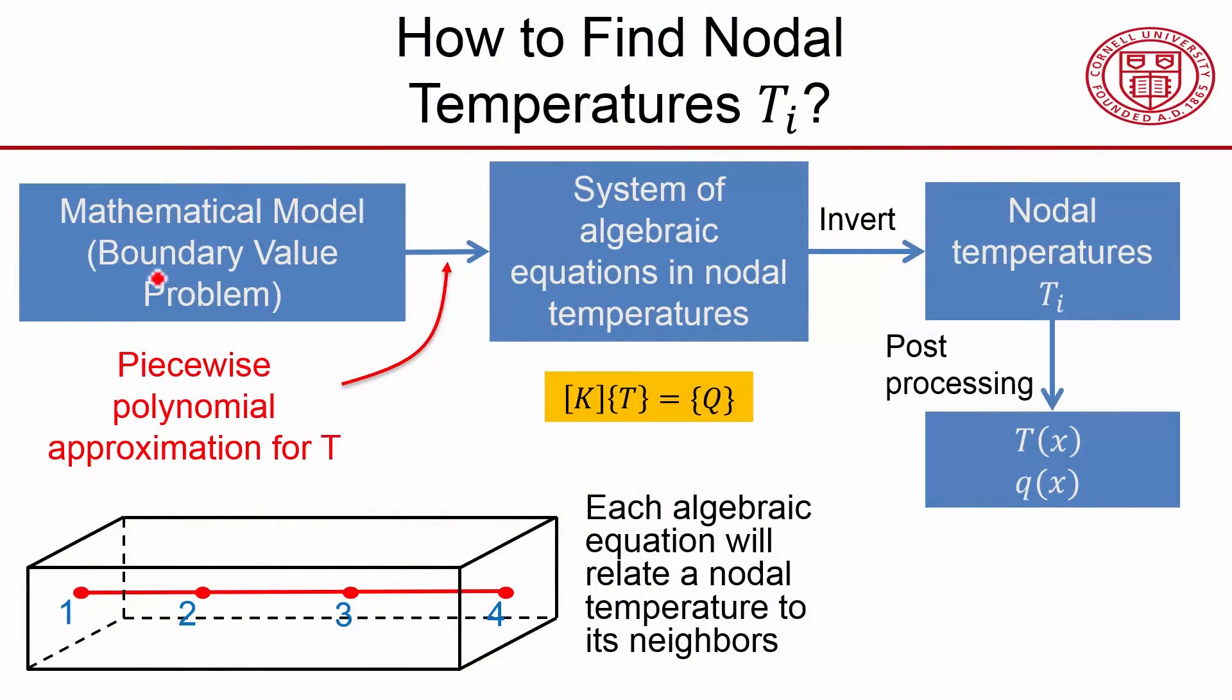I talked about how one can go from a boundary value problem to a system of algebraic equations and nodal temperatures using the piecewise polynomial approximation for the temperature. So this is our assumed shape. In our case, we assumed it as a combination of linear polynomials. And in the process of going from the differential equation to the algebraic equations, we introduce an error called the discretization error.